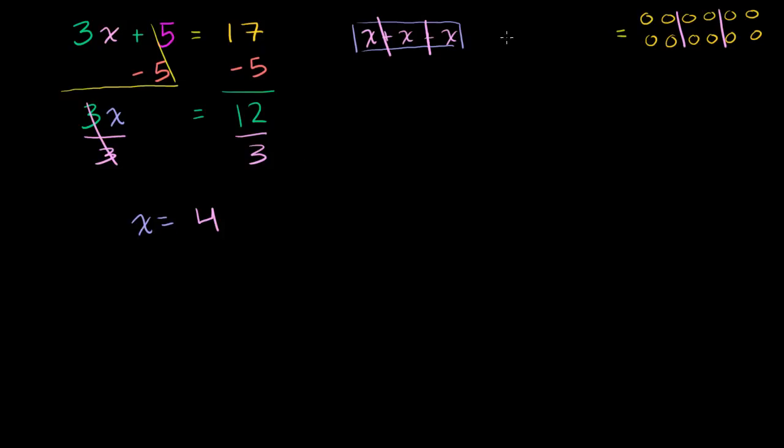You get x is equal to 4. And you get that exact same thing over here. When you divided 3x into groups of 3, each of the groups had an x in it. And when you divided 12 into groups of 3, each of the groups have a 4 in it. So x must be equal to 4. x is equal to 4.